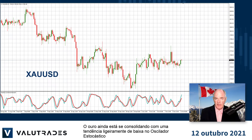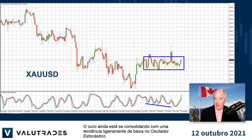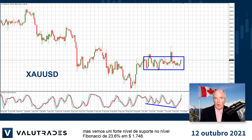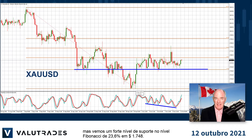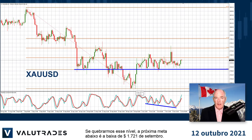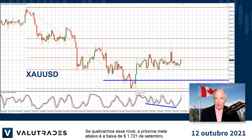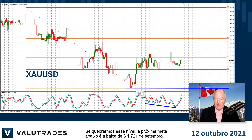Gold is still consolidating with a slightly bearish bias on the stochastic oscillator, but we see a strong level of support at the 23.6% Fibonacci level at $1,748. If we break this level, the next target below is the $1,721 low from September.